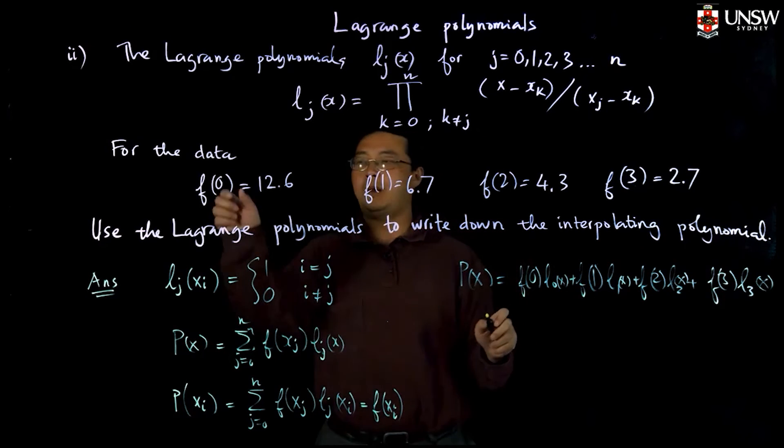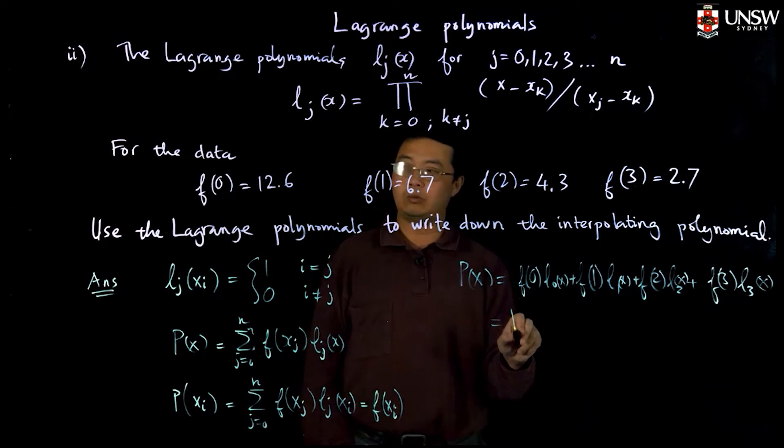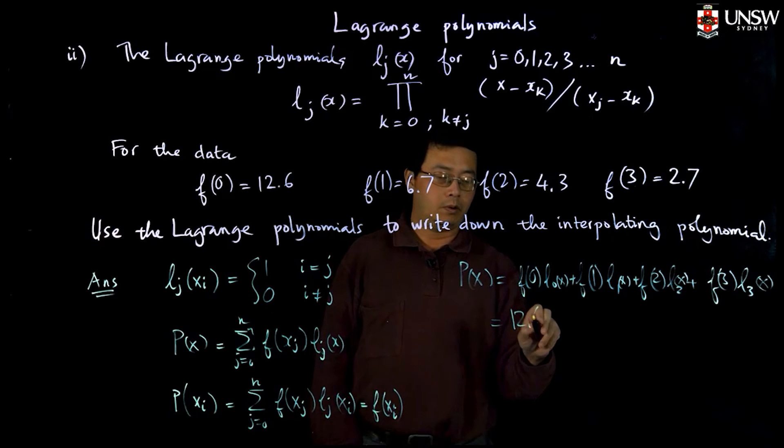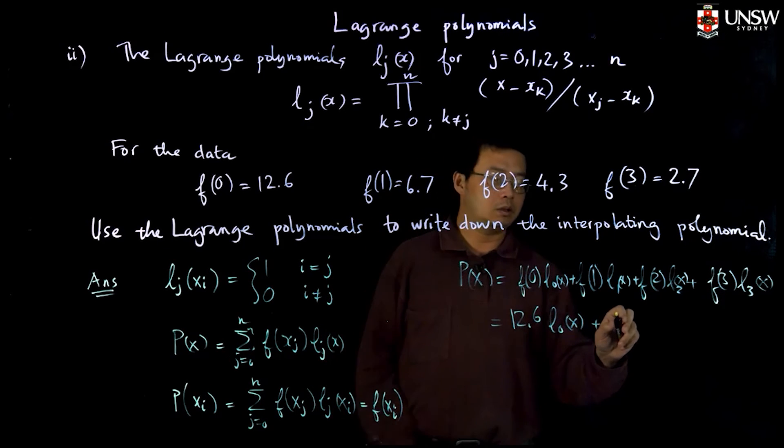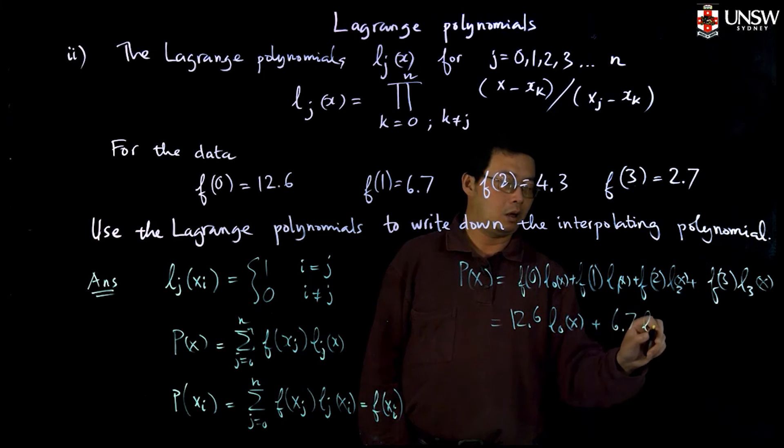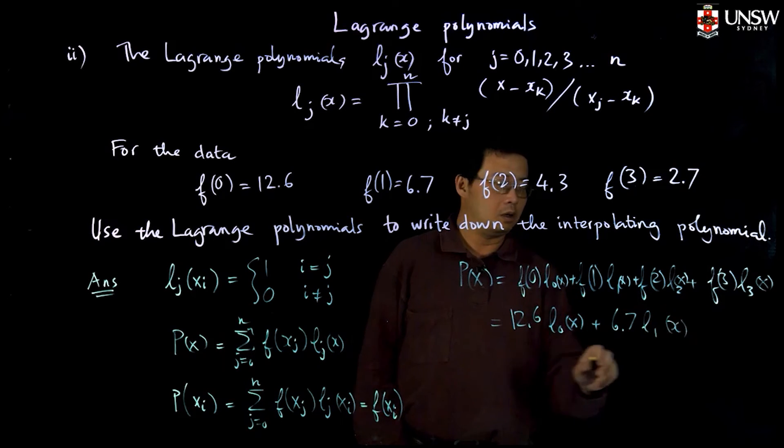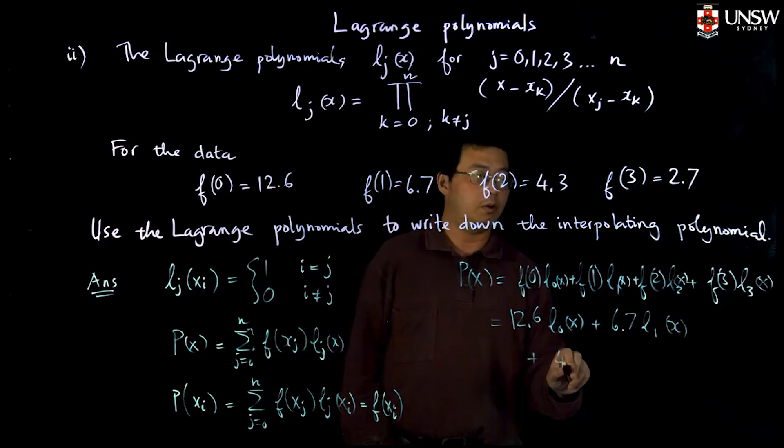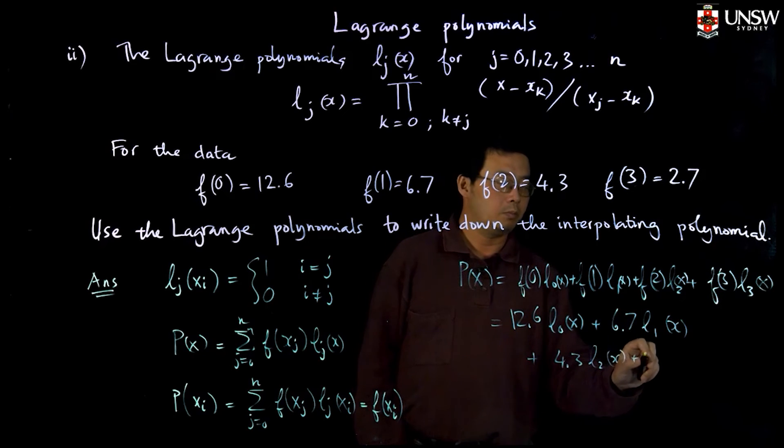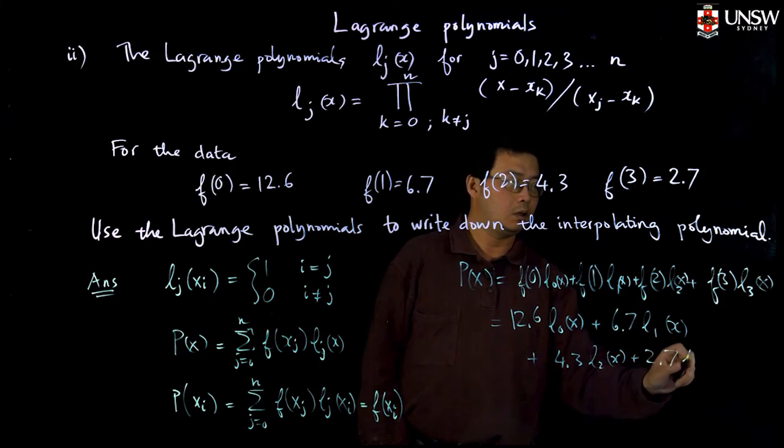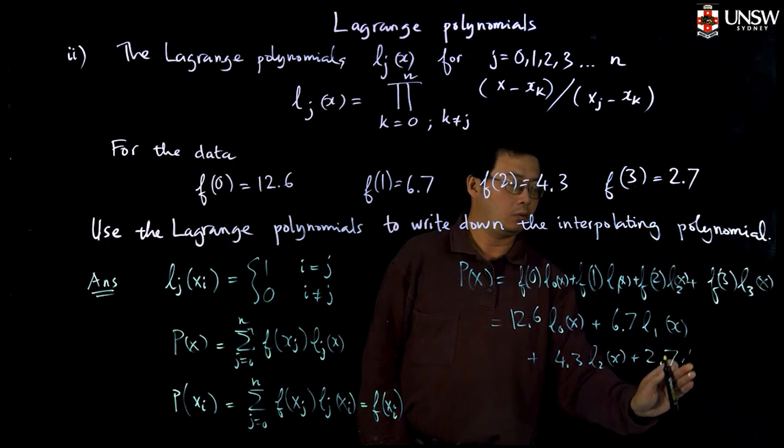Now we just plug in the values, so this is 12.6 times l0(x) plus 6.7 times l1(x) plus 4.3 times l2(x) plus 2.7 times l3(x).